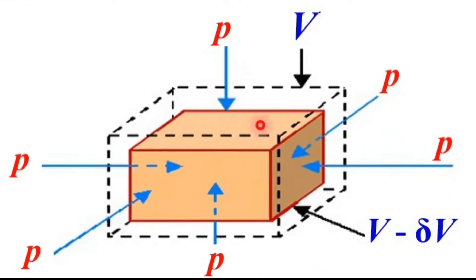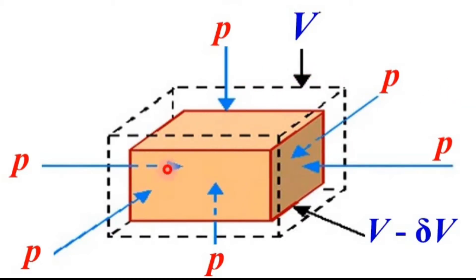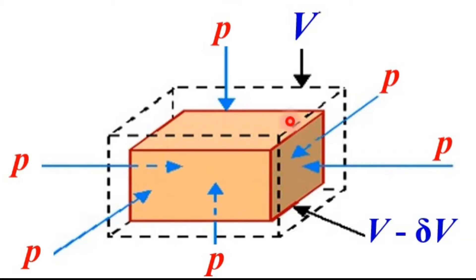Here you can see this is the uniform pressure applied on this volume. The initial volume is represented by the dotted black line — this is the original volume. Due to this pressure the volume changes, and that is represented by the brown color, which is the final volume.